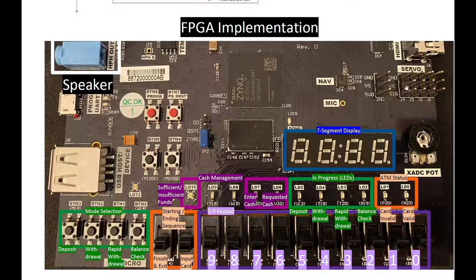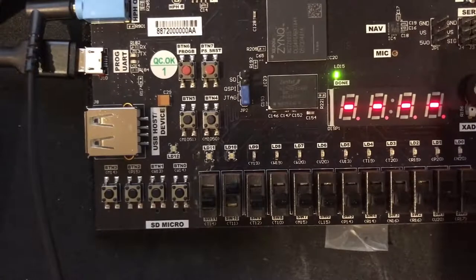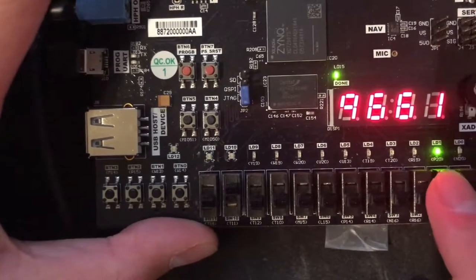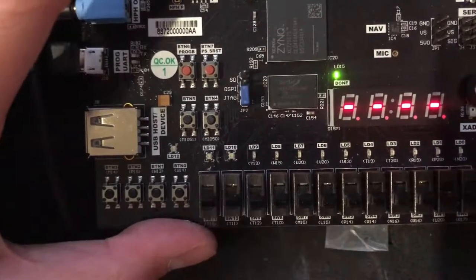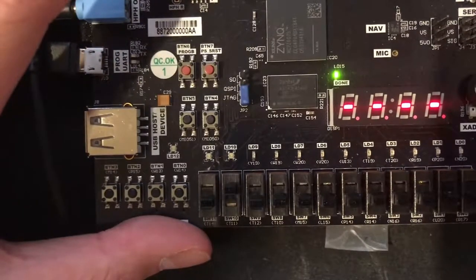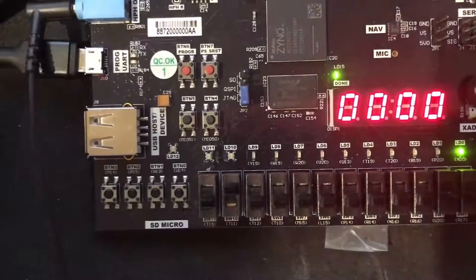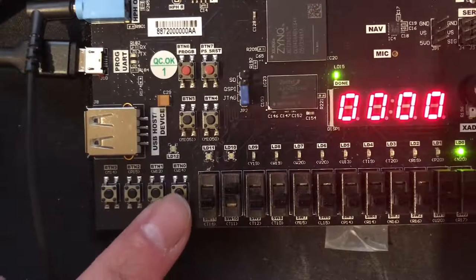I'll now turn it over to Jad and Albert for the live demonstration. Hello, my name is Jad. We'll start by demonstrating an incorrect passcode entry. First we insert the card using switch 10, then enter a value of 9-6-6-1. As we can see, LED one lights up indicating the incorrect passcode. We'll take out the card, reinsert it with switch 10, and enter the correct passcode of 0-0-0-0.